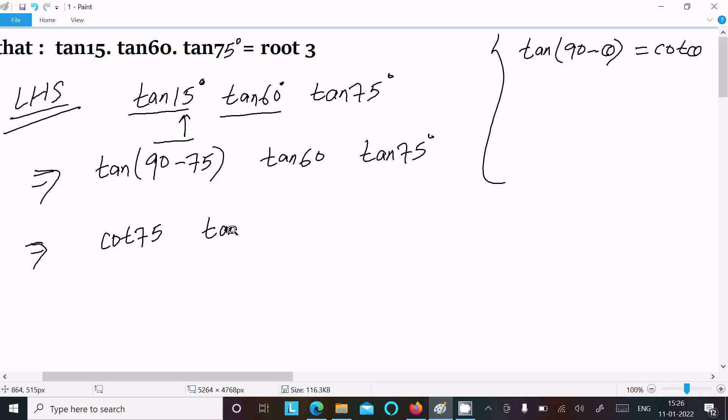After that here we know tanx·cotx that is equal to 1. So we can write here tan75 into cot75.